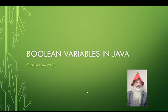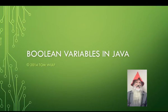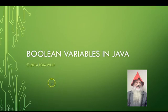Continuing our look at the primitive types in Java, now we're going to look at Boolean variables. Boolean comes from George Boole, who is a famous mathematician. A Boolean variable is a two-state variable which can either be true or false. Later on, we'll see that we use these a great deal in working with our if, else, and other conditional logic.